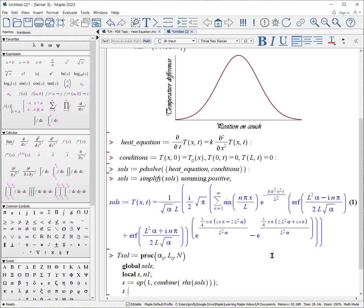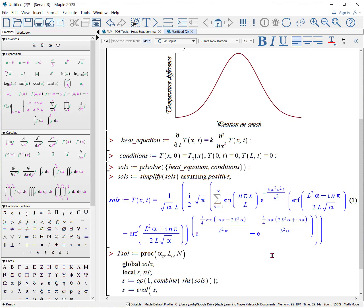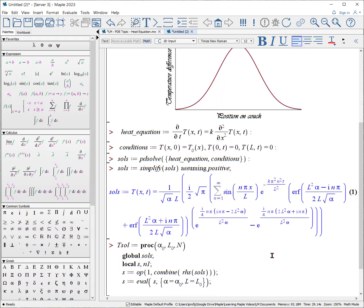Then we're going to evaluate this operand, and we're going to give it the fact that alpha is equal to alpha underscore underscore zero, and L is equal to L underscore underscore zero, the values that we passed to the procedure.